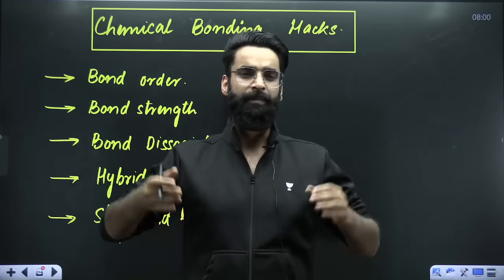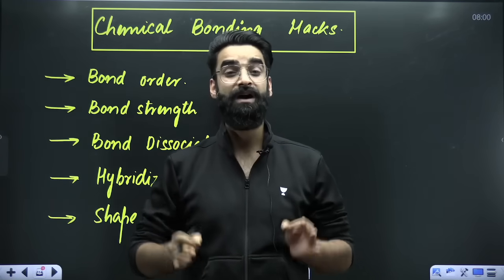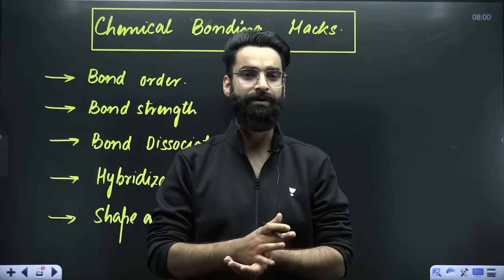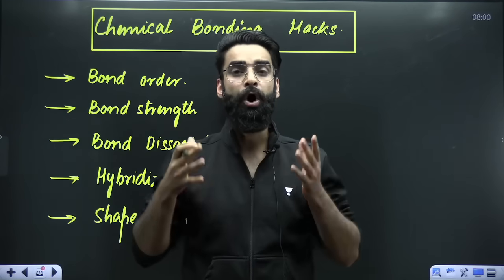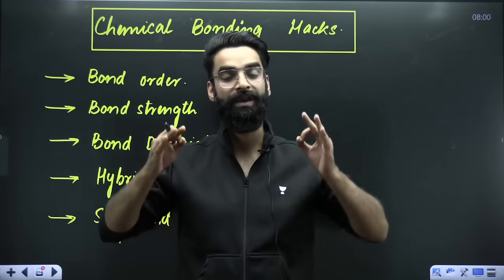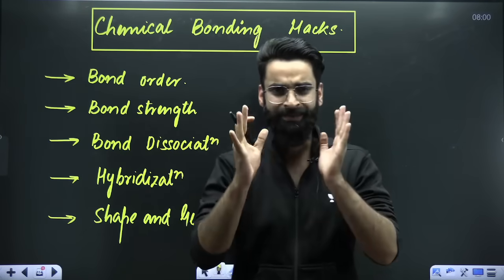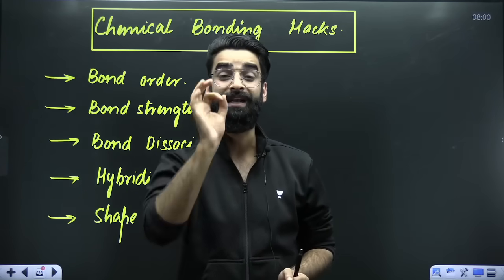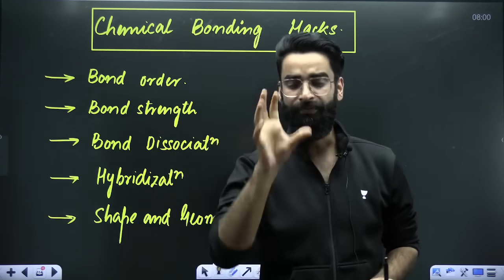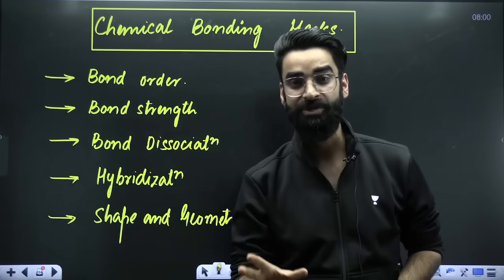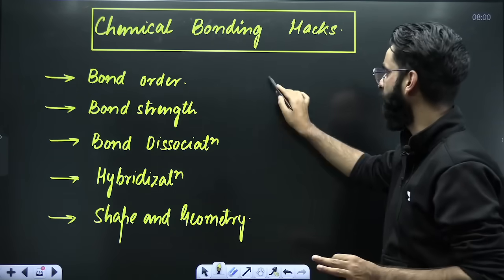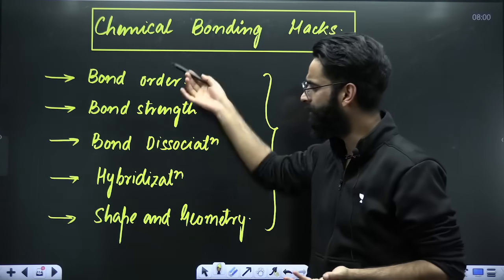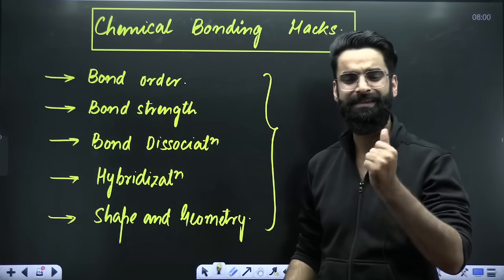And why is that? Because almost four to five questions are asked from the chapter Chemical Bonding — whether you talk about your NEET examination or your JEE examination. My dear students, all those four or five questions are considered to be very, very easy if your concepts are clear. In this particular session, I am going to let you know some amazing tricks by means of which you can solve the questions in less than 10 seconds.